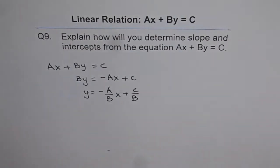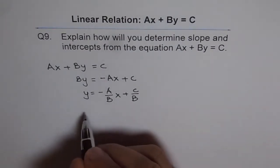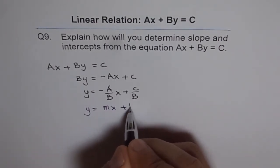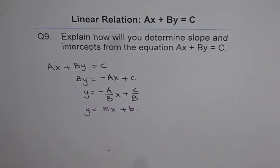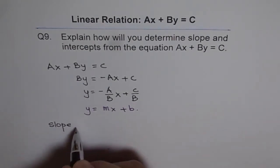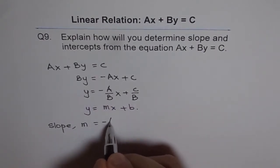If you compare this equation with slope-intercept form equation which is Y equals to MX plus B, what do you find? You conclude that slope M is equal to minus A over B.